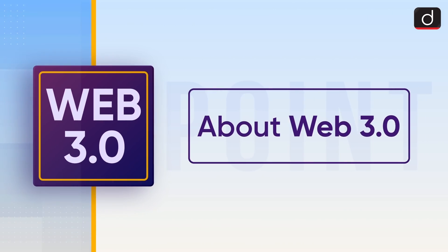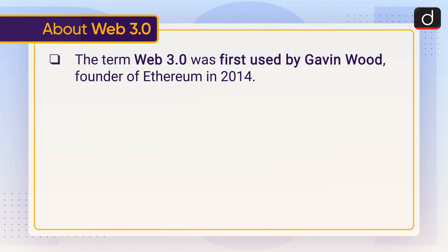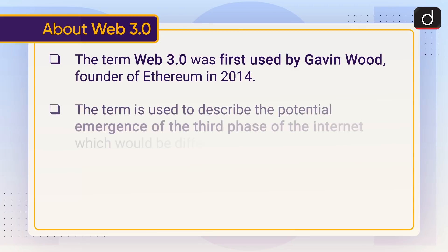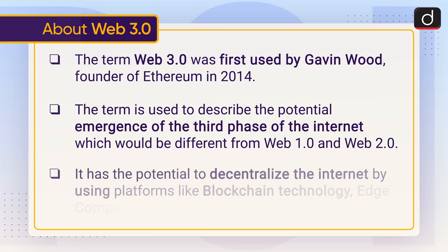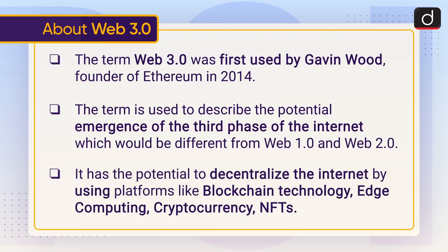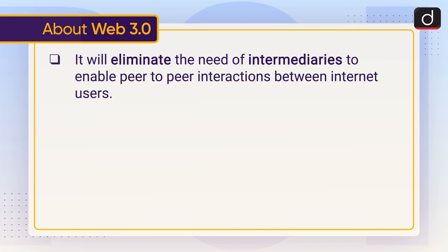Now let's discuss Web 3.0. The term was first used by Gavin Wood, founder of Ethereum, in 2014. It describes the potential emergence of the third phase of the internet, which would be different from Web 1.0 and Web 2.0. It has the potential to decentralize the internet by using platforms like blockchain technology, edge computing, cryptocurrency, and NFTs. It will eliminate the need for intermediaries to enable peer-to-peer interactions between internet users.